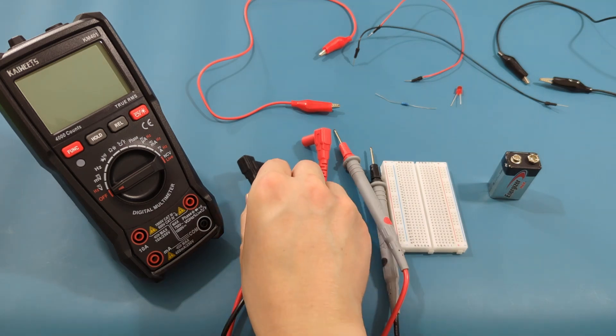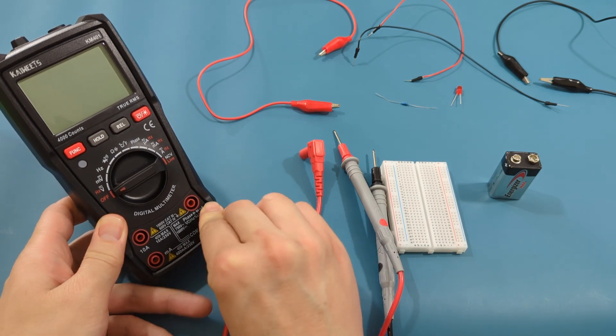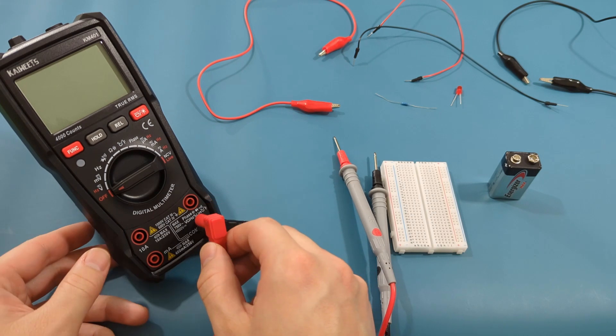On the multimeter, connect the black probe to the COM port. Connect the red probe to the milliamperes port. This port supports current up to 400 milliamperes.